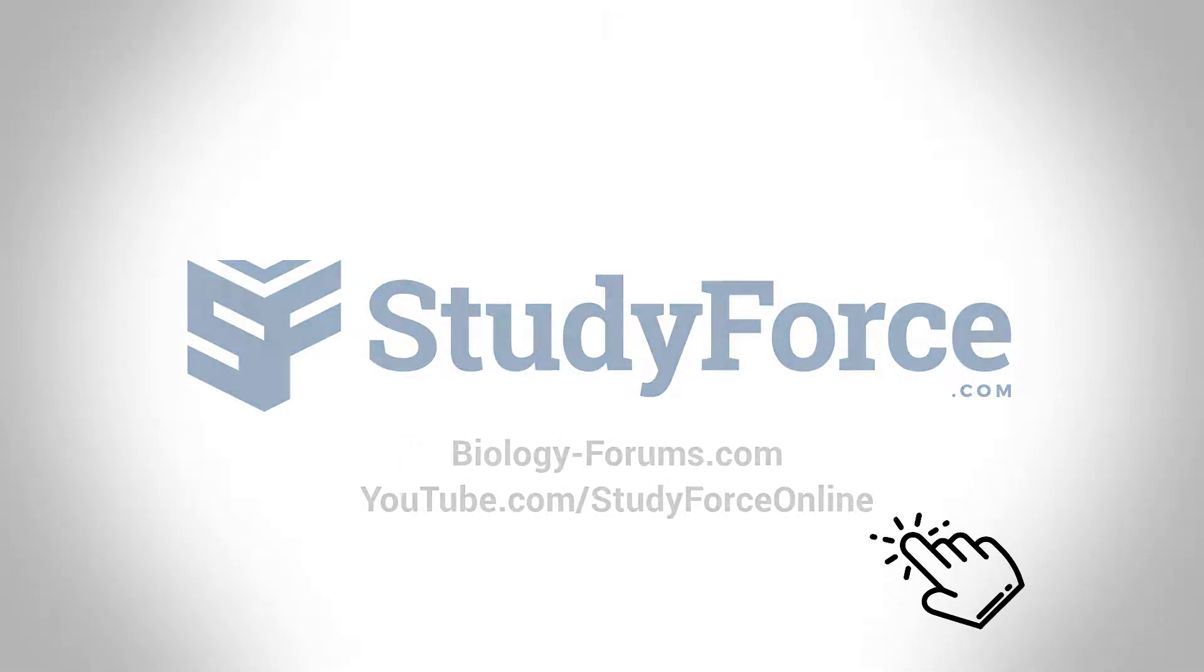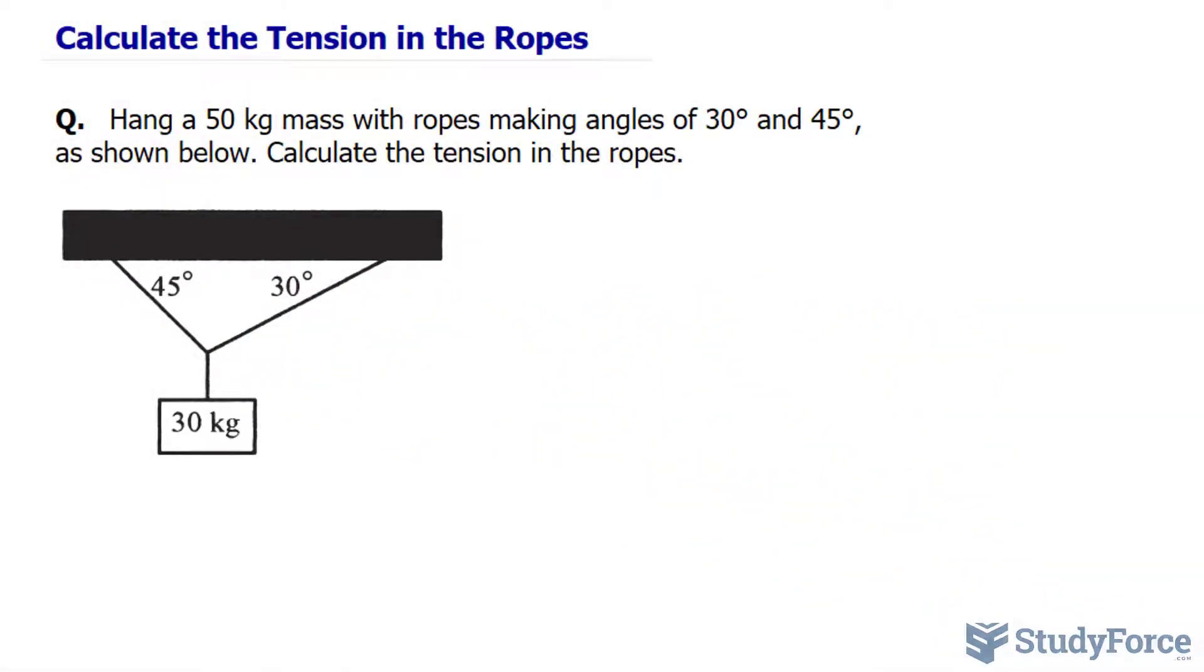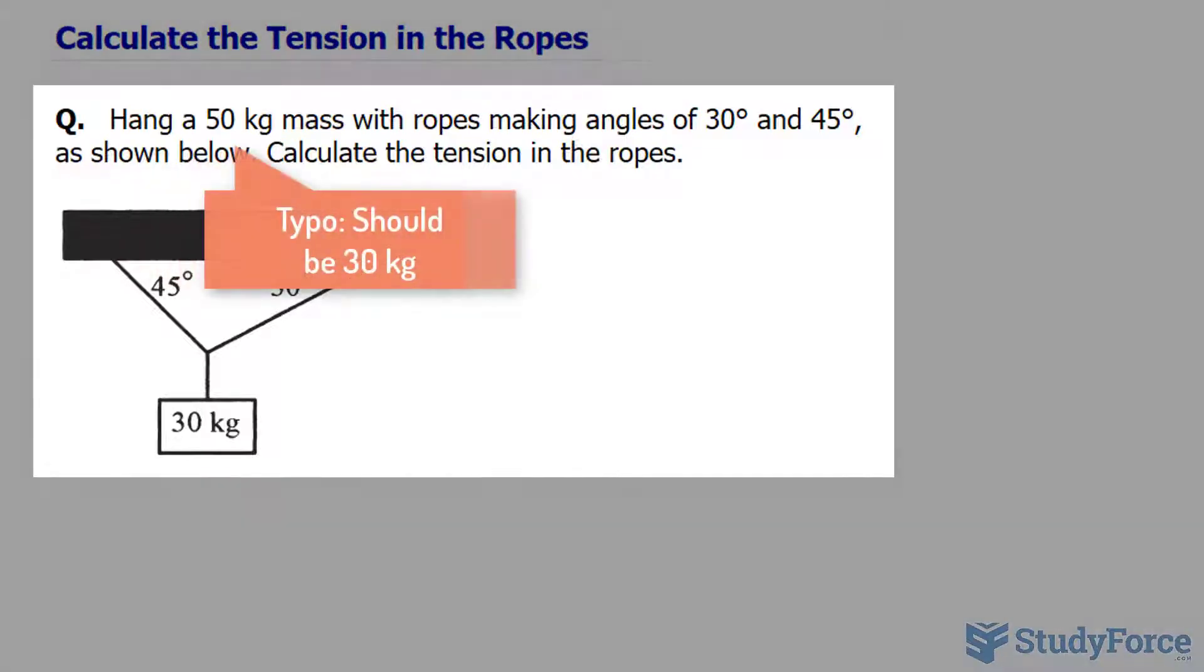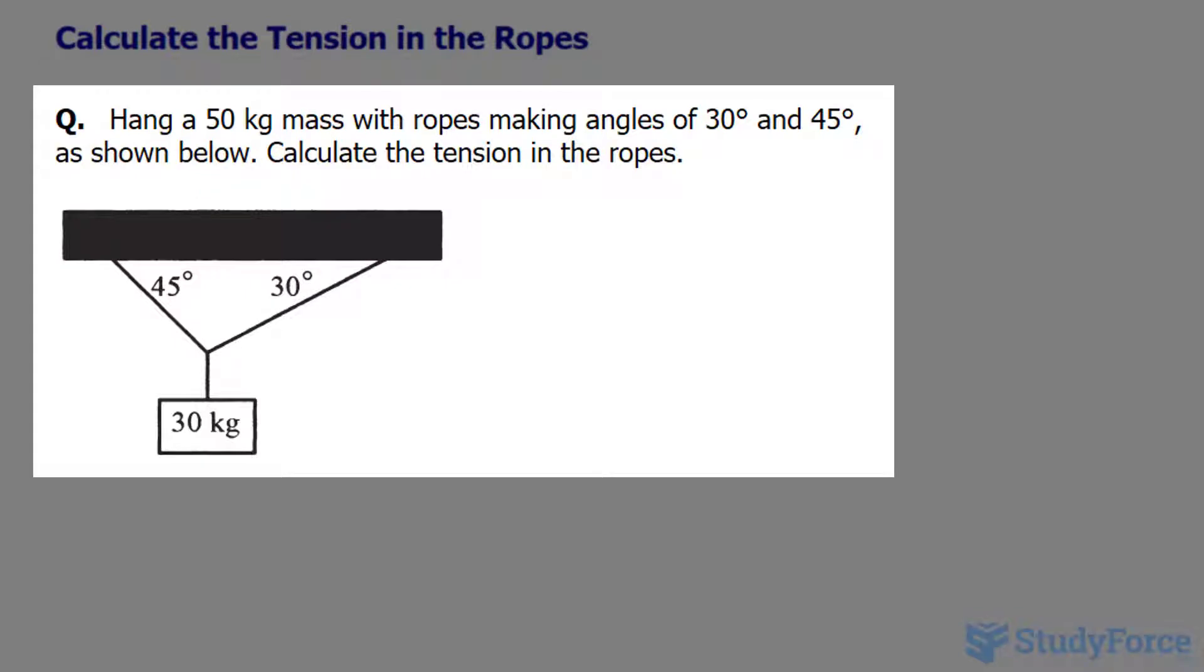In this lesson I'll show you how to calculate the tension in the ropes. The question reads: hang a 50 kilogram mass with ropes making angles 30 degrees and 45 degrees as shown below. Calculate the tension in the ropes.